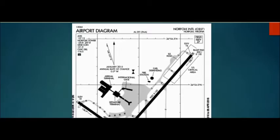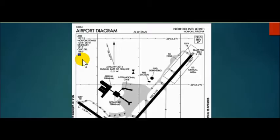We start out at Norfolk International where our last flight terminated. Never ever leave the airport without an airport diagram because of the wealth of information it offers. Looking at the Norfolk International Airport diagram: ATIS is 127.15, tower frequency is 120.8, ground control is 121.9, clearance delivery is 118.5. This is Class Charlie airspace — most airports with separate ground control and clearance delivery are Class Charlie or Class Bravo.